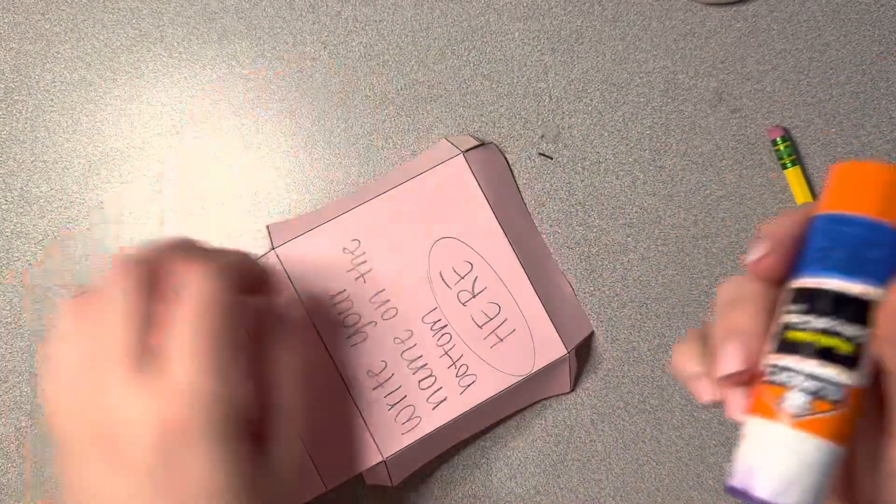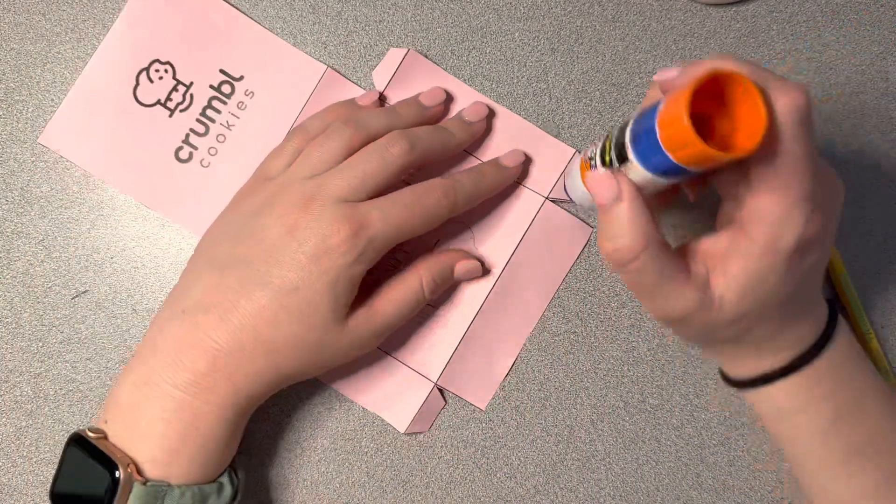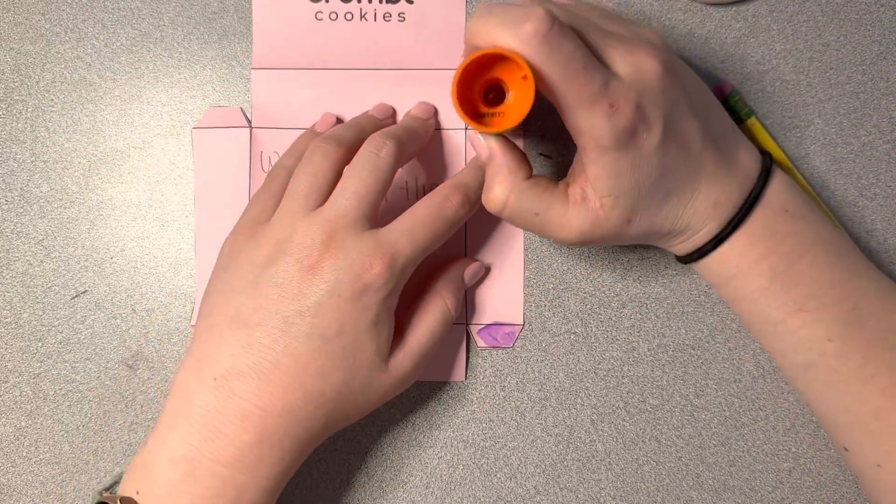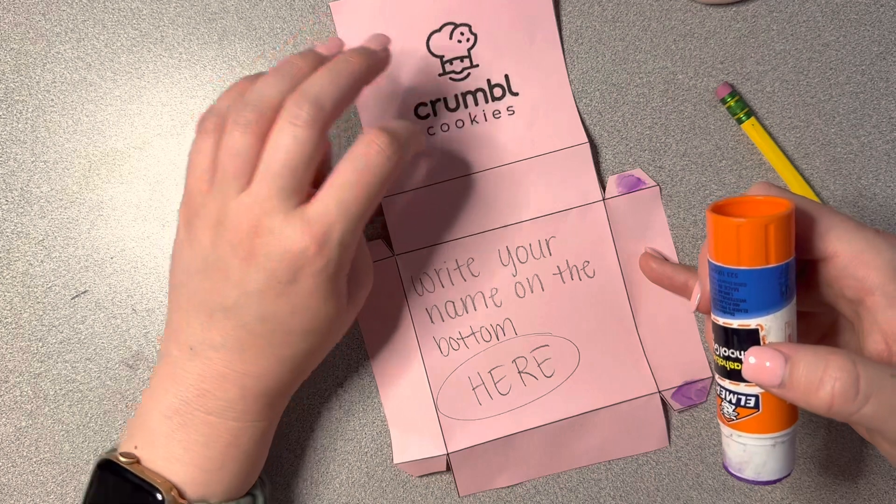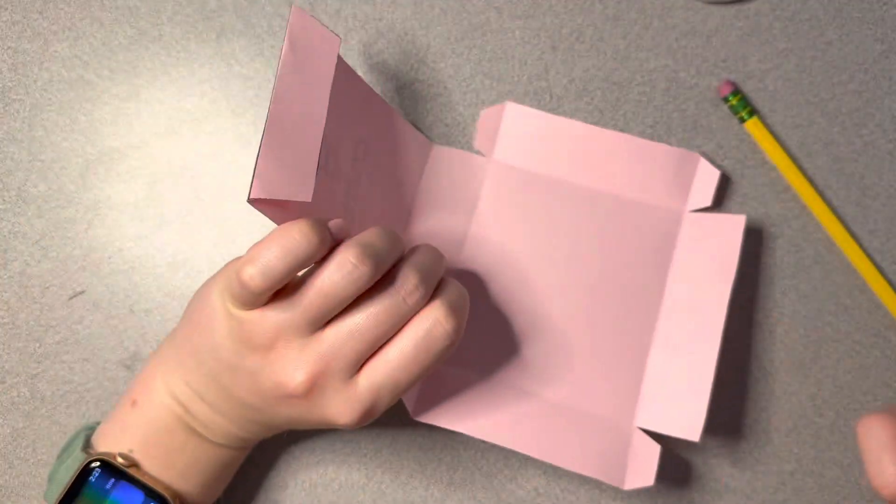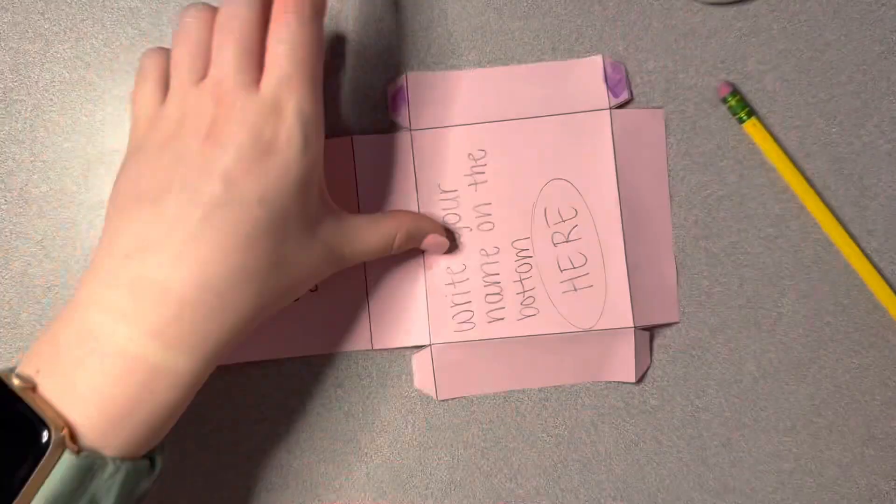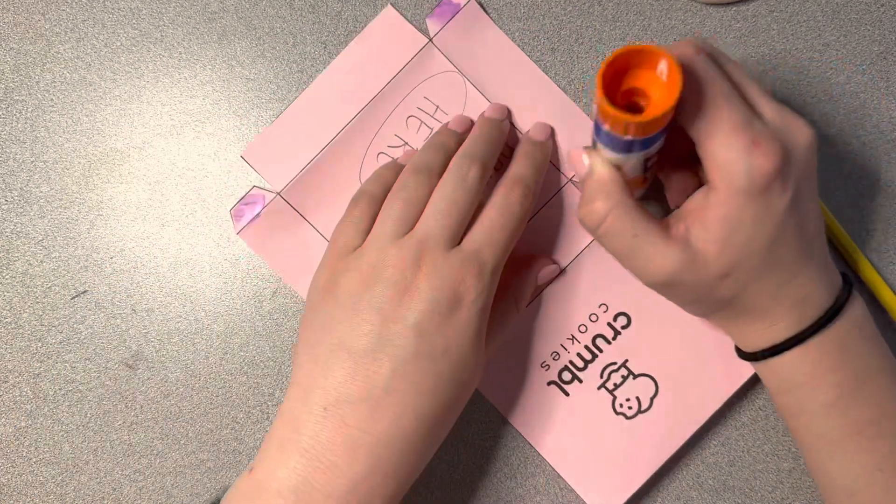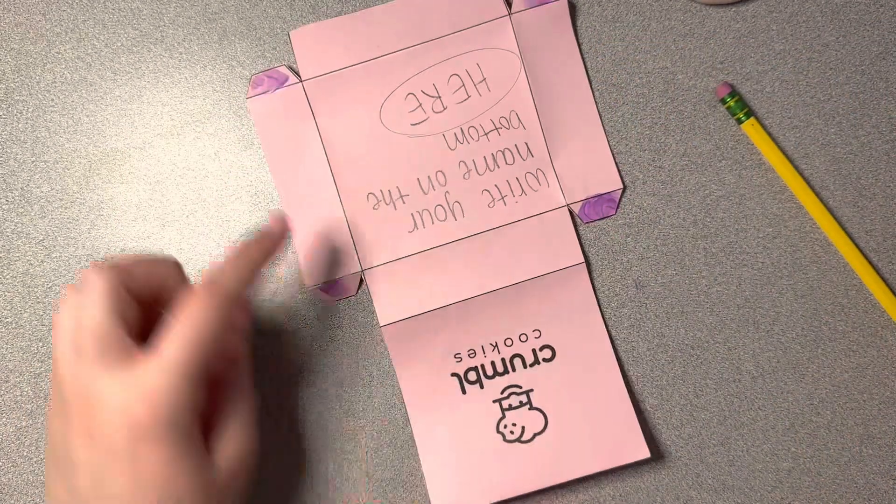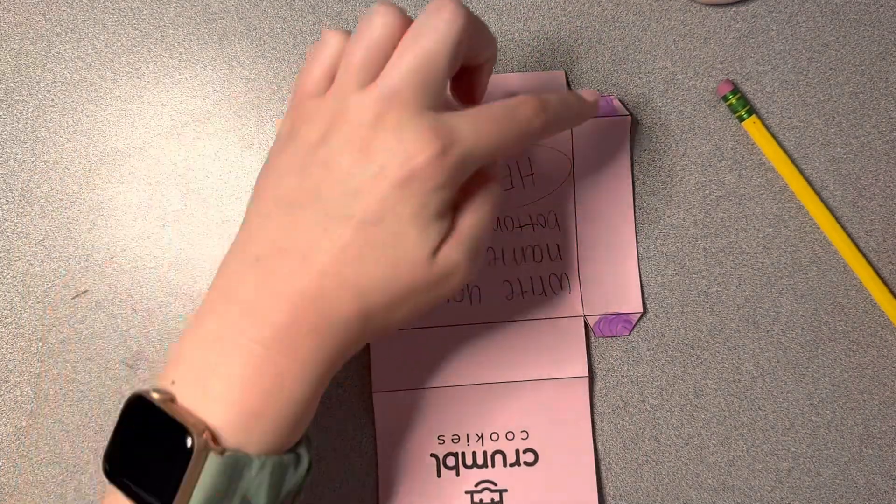You're going to put the glue on the outside. So one, two. You're putting the glue where you can see your crumble cookie label. Your glue does not go on this side where it's blank. It goes on the outside. Put glue here. So you're only putting glue in four spots. One, two, three, four.